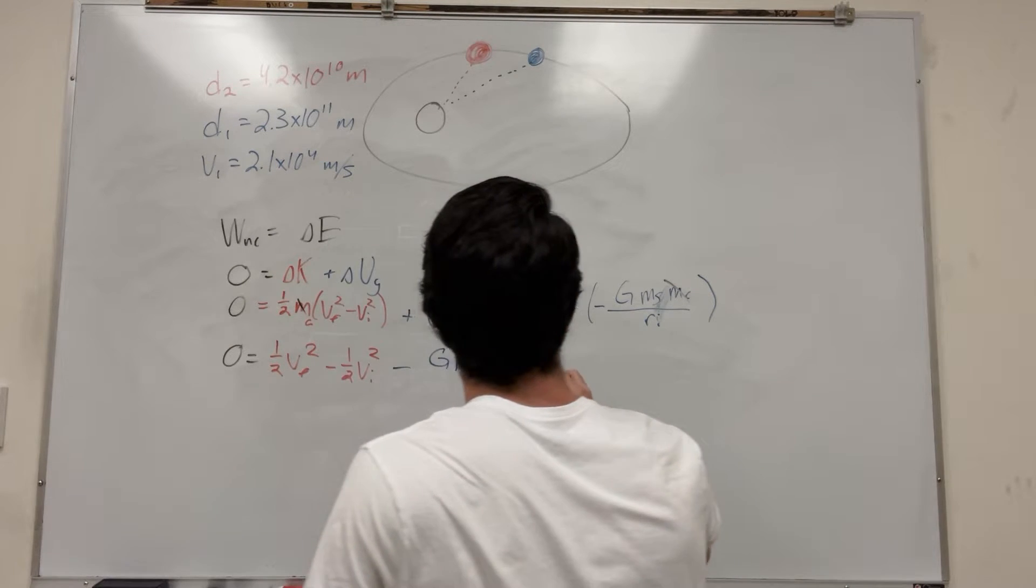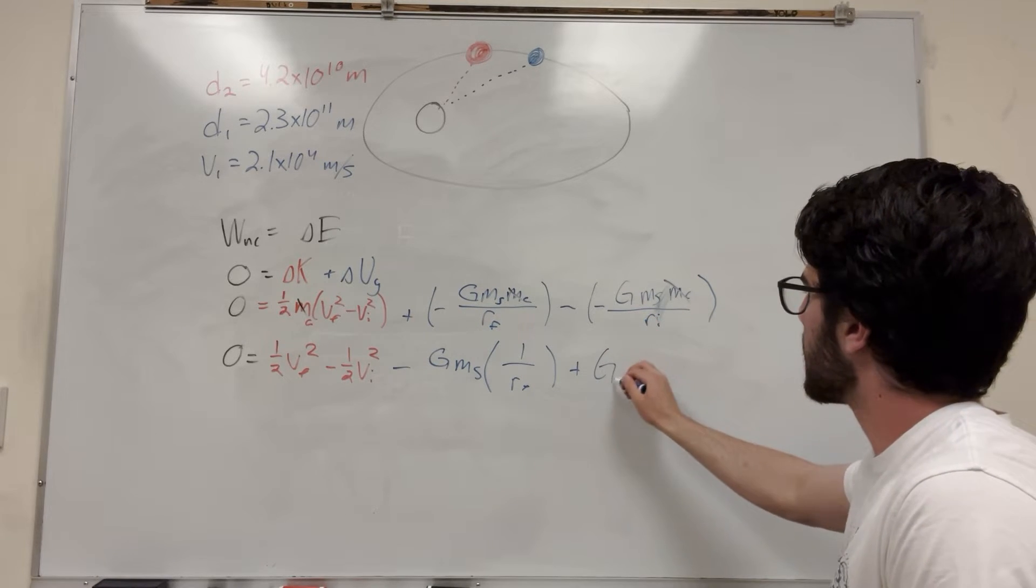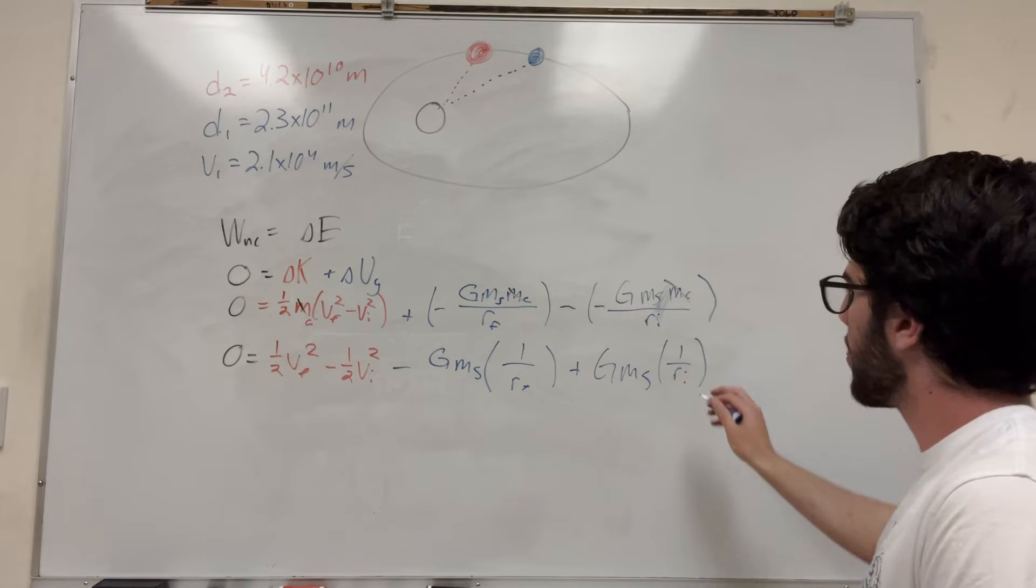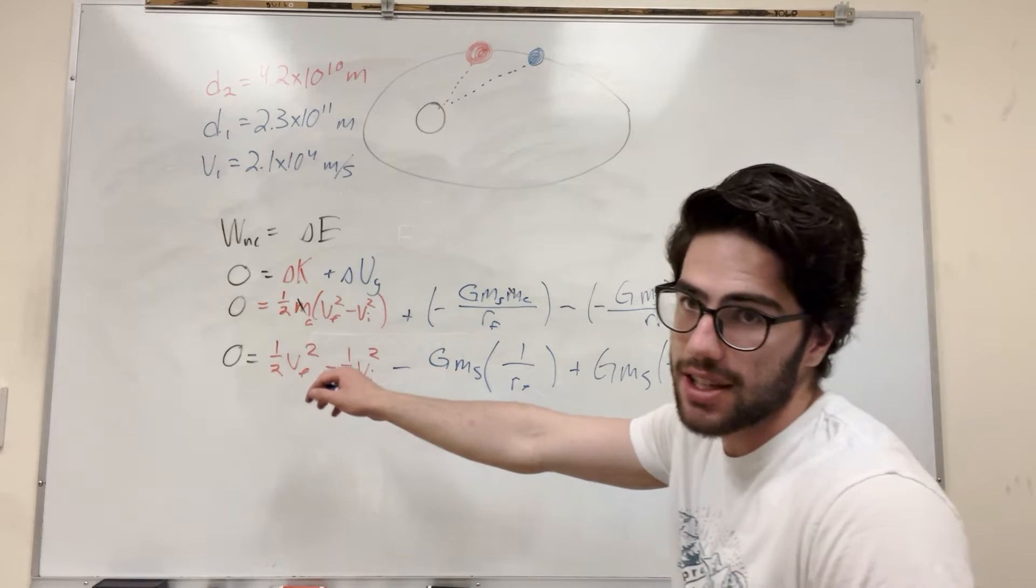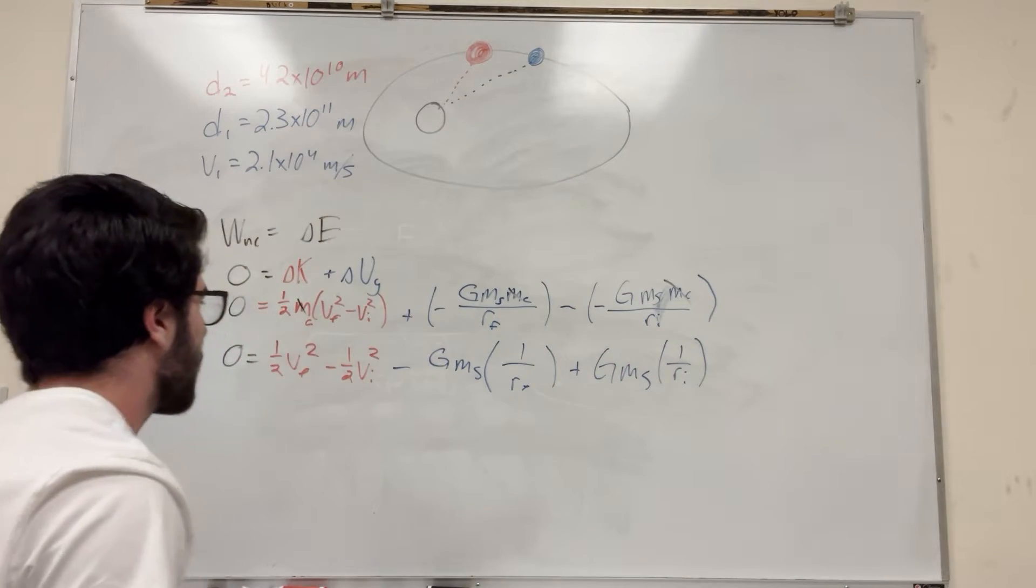And then, I guess, plus because of the negative negative. Gravity times mass of the sun, one over radius initial. So we have, like, all of this stuff. And we're trying to find velocity final. So basically all I have to do is rearrange this to get it in a system that we want it to be.